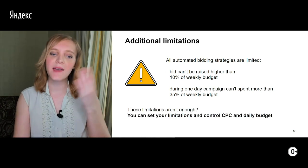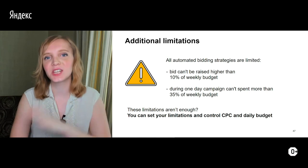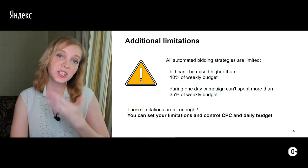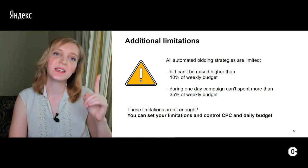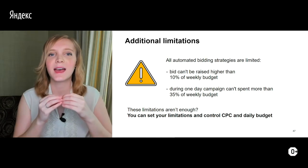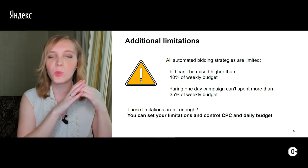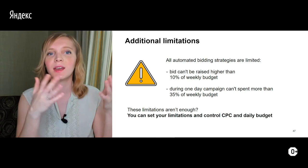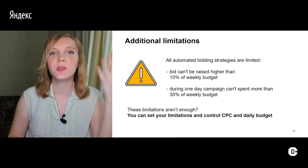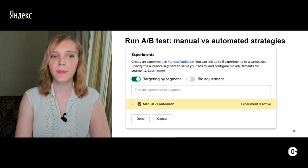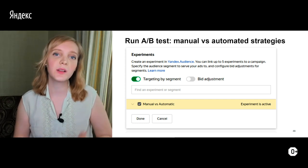If the preset limitations aren't enough, you can add additional limitations like a daily budget cap. But again, don't set them too tight — if the daily or weekly budget is too small, it will be really difficult for the system to attract people throughout the day, because sometimes the system needs to bid more for a really profitable customer.